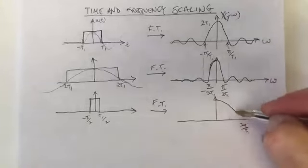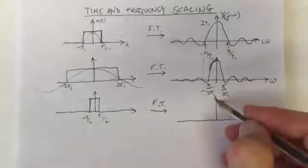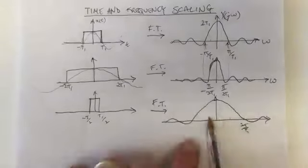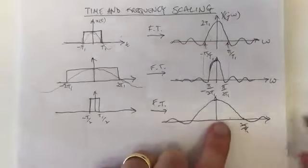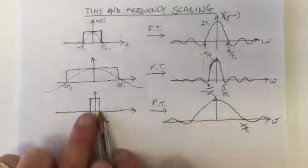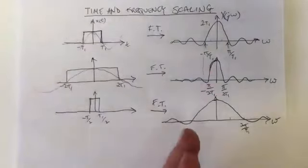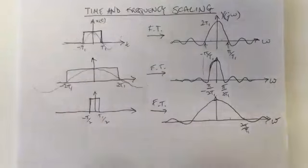So now instead of crossing here at π on T1, it would be 2π on T1. And that means that, as you would expect, you need a higher bandwidth, more bandwidth, higher frequency components if you're trying to make your time domain signal switch on and off faster. So this is the general principle to remember: if you compress in one domain, you expand in the other domain, and vice versa.